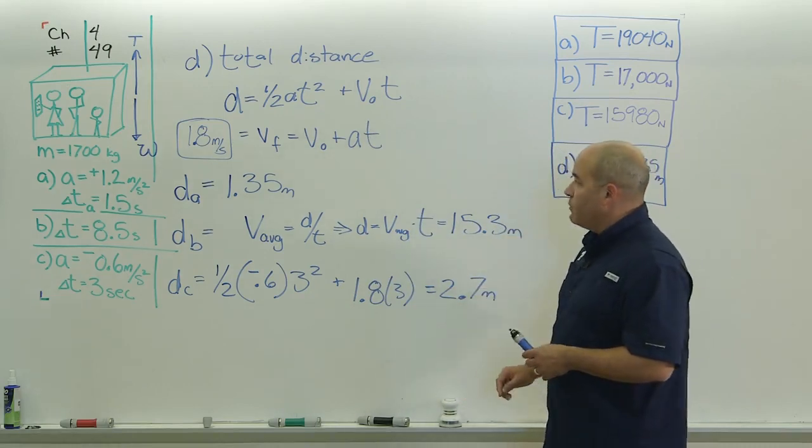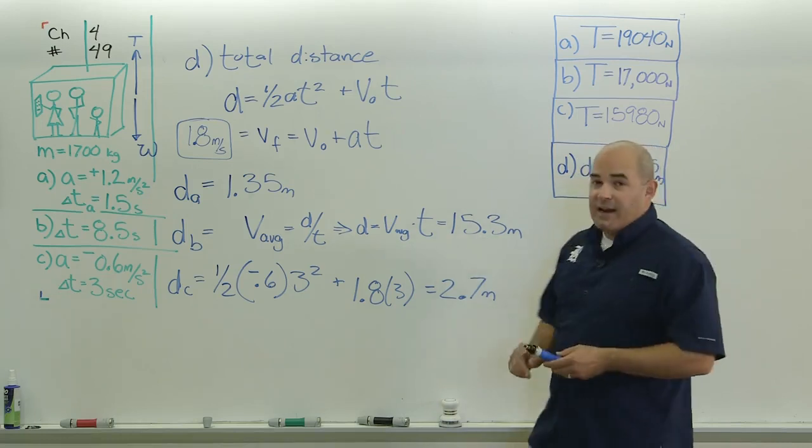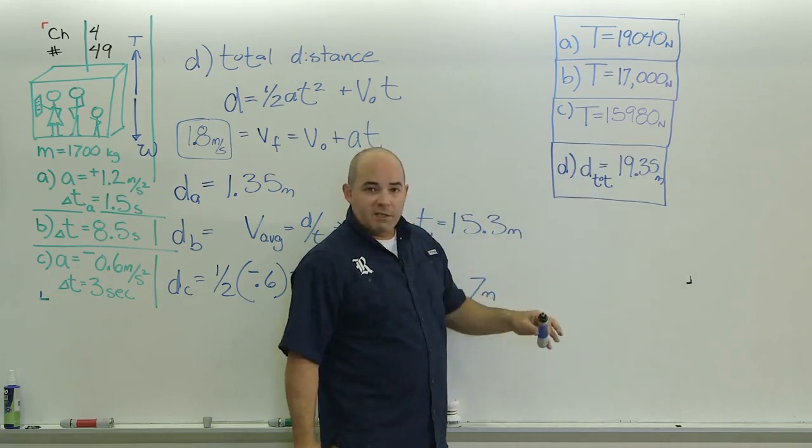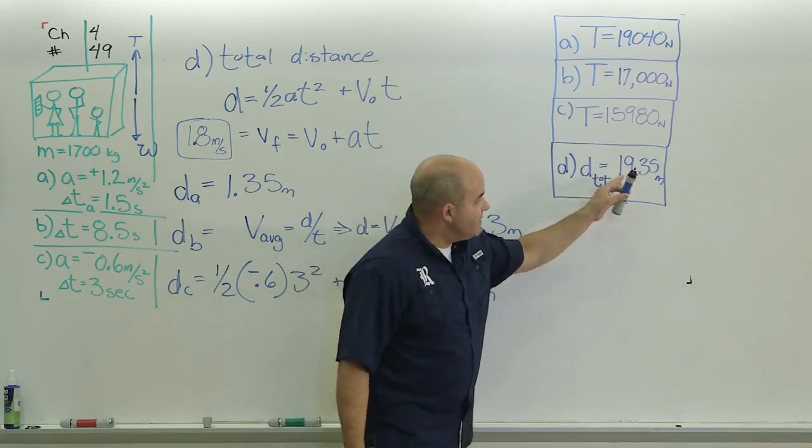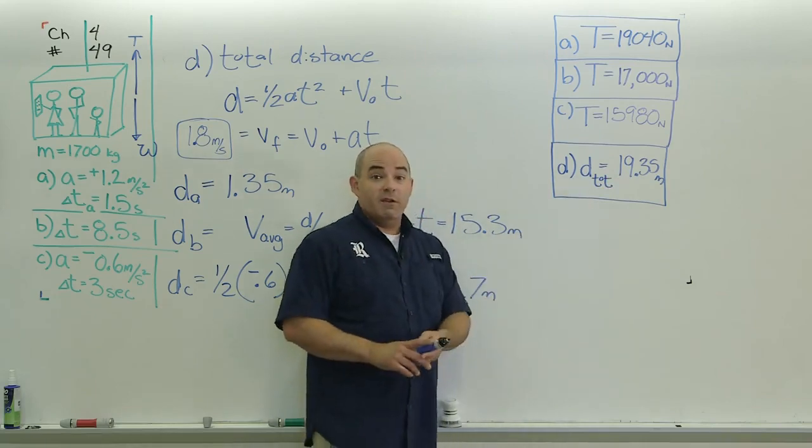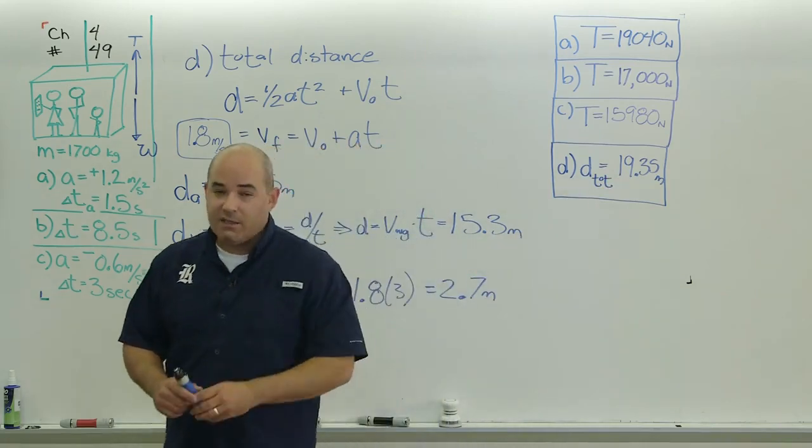Added all those together for you, and for a total displacement for the entire trip on that elevator, I got 19.35 meters. If I'd paid a little bit more attention to my significant figures, I might have rounded that to 19.4, but if you were exact, then we should have got a number really close. There you go. That's how you do number 49. I'll see you in the next video.